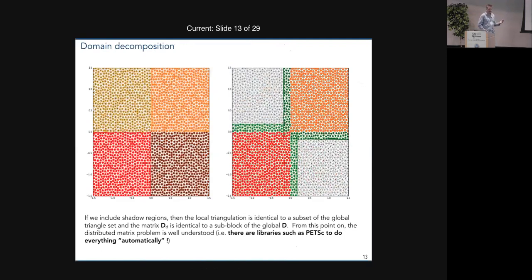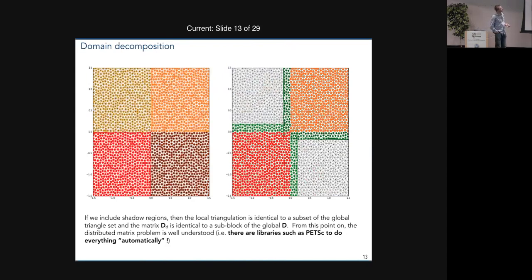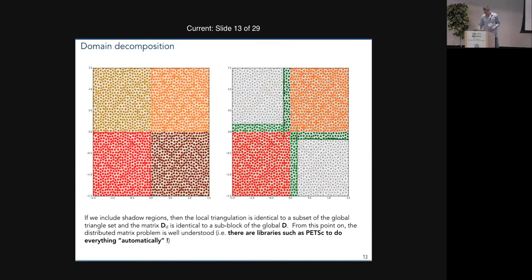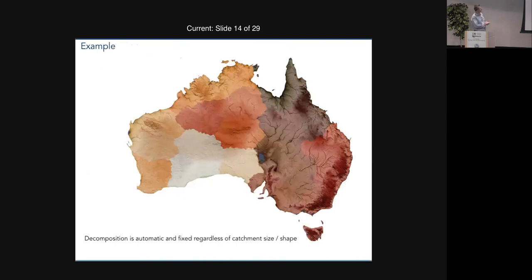Domain decomposition is in principle pretty straightforward. As long as you have some overlap of the two domains in which the structure of the triangulation — the neighbor relationship between the points — is reproduced, then you can guarantee that you can actually build all of these matrices piece by piece without having to construct the whole triangulation of the whole domain. So in principle this problem lends itself to parallelism.